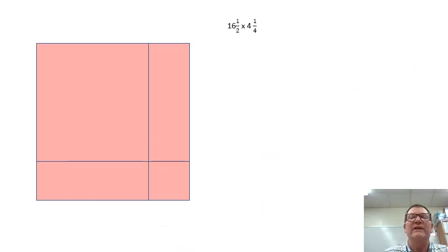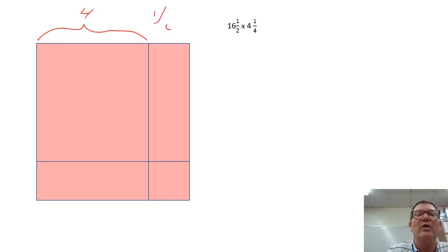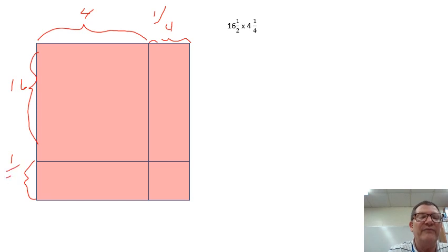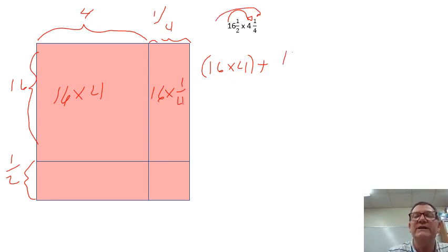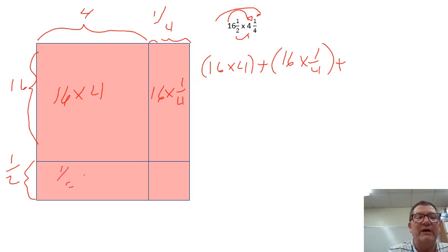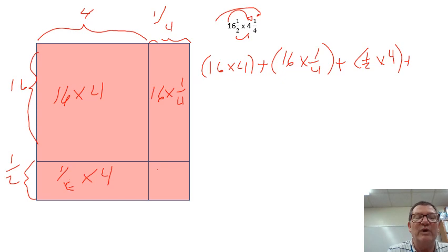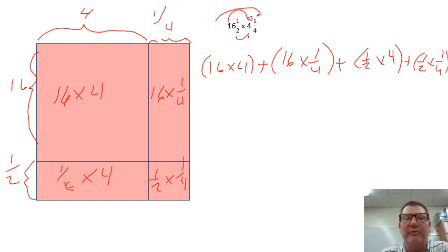Let's try it again. This one is sixteen-and-a-half times four-and-a-quarter. Labeling it: here's my four-and-a-quarter; over here I have sixteen for this side, and this is my half. Looking at the distributive model, that gives us: sixteen times four, plus sixteen times one-quarter, plus one-half times four, plus one-half times one-fourth. Our area model and our distributive property are exactly the same.